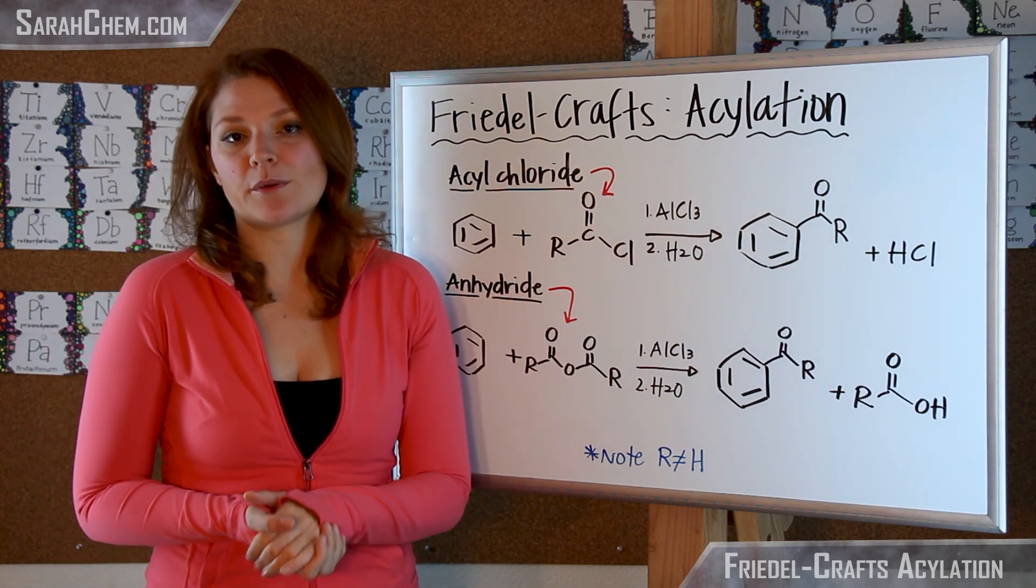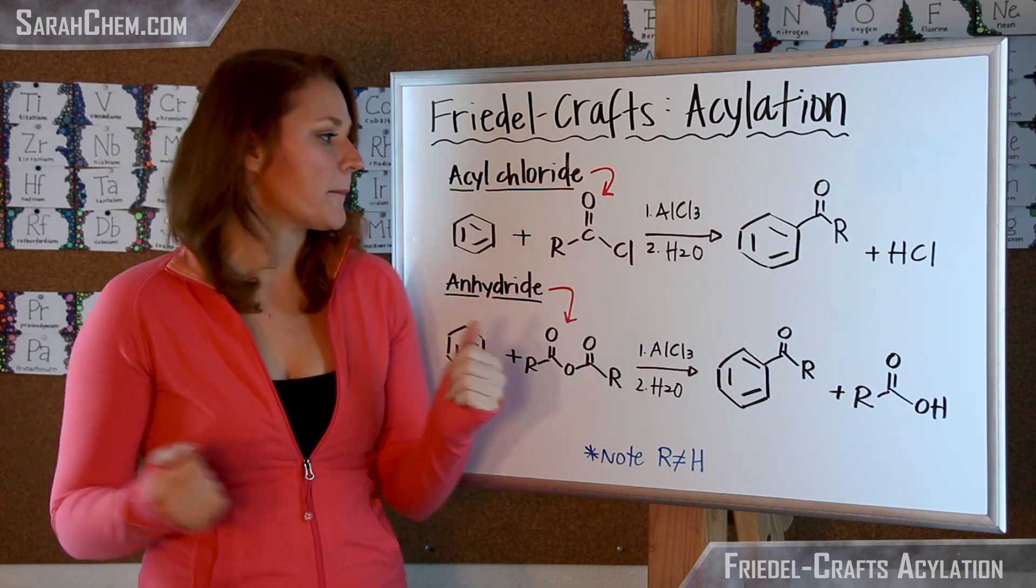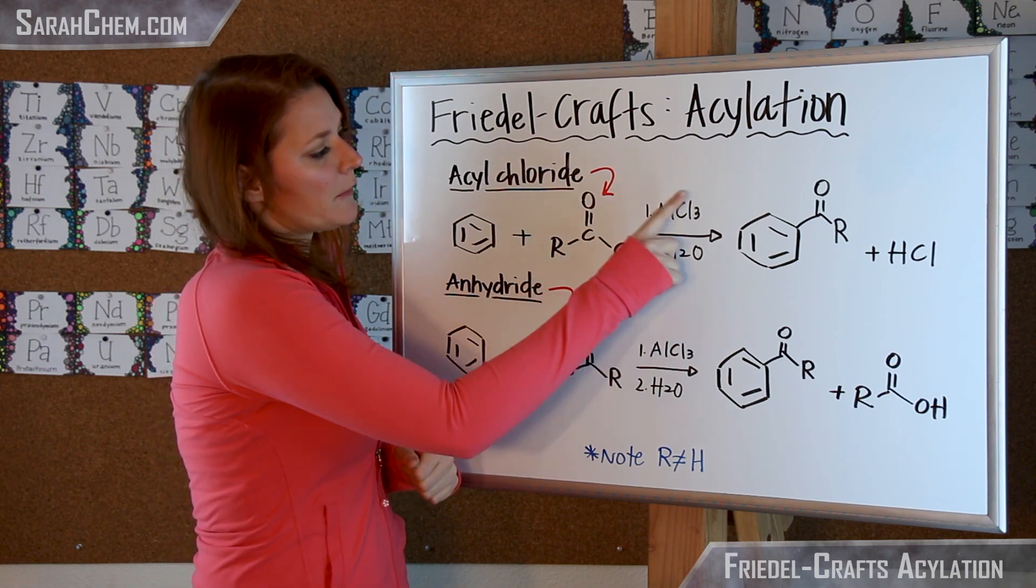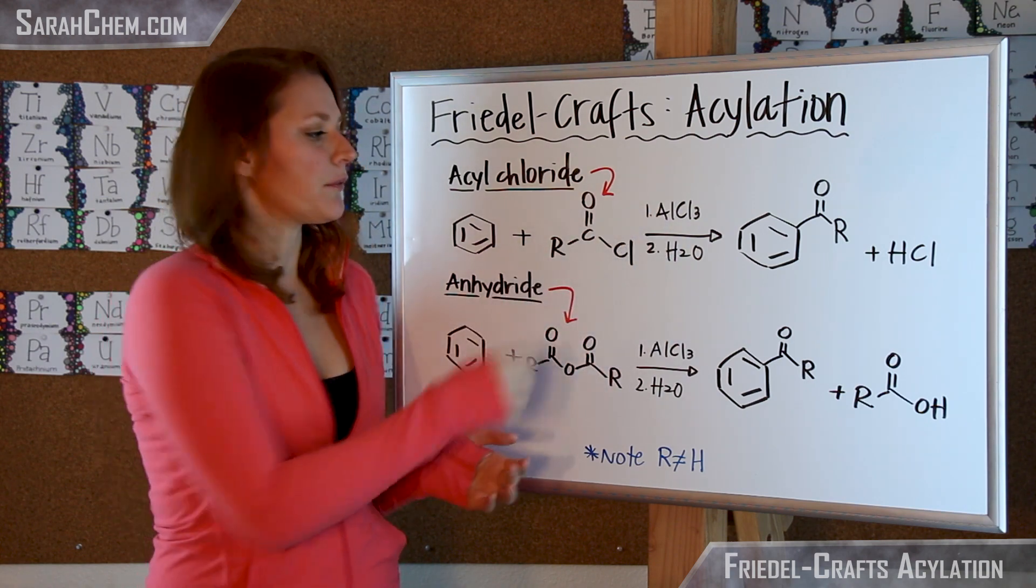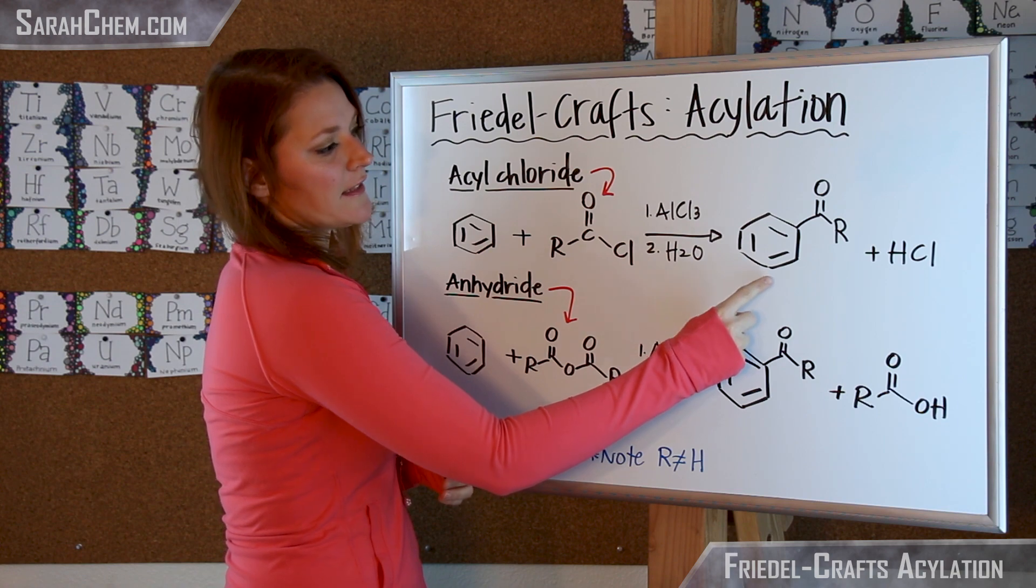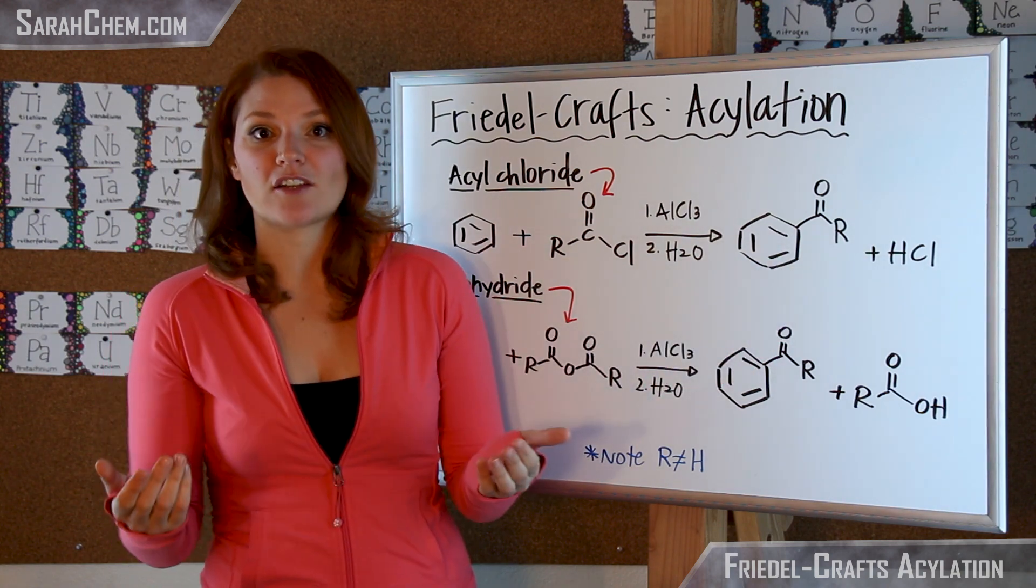Maybe it's a methyl group that you want to attach, then R would be CH3. So you're going to react those two in the presence of AlCl3 and then H2O, and you'll get out your acylated benzene group, and then you'll also get out your HCl.